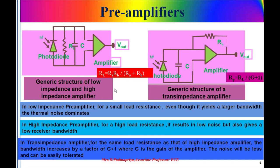The trans-impedance amplifier overcomes the drawbacks of the high impedance amplifier. This diagram shows the trans-impedance amplifier. In this case, R_L is used as a negative feedback resistor around an inverting amplifier. R_L can be large since the negative feedback reduces the effective resistance seen by the photo diode by a factor of g, such that R_p is equal to R_L divided by g plus one, where g is the gain of the amplifier. Compared to the high impedance design, the trans-impedance amplifier bandwidth increases by a factor of g plus one. Although this increases the thermal noise compared to the high impedance amplifier, this increase is usually less than a factor of two and can easily be tolerated.